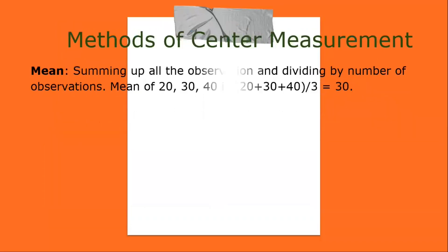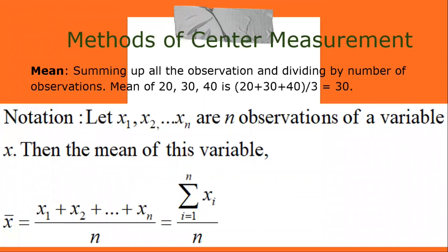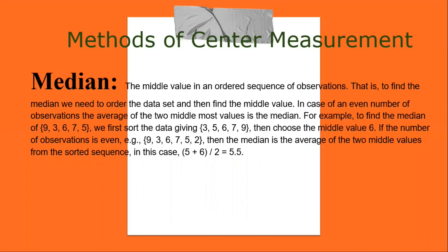The mean is computed by summing up all the observations and dividing by the number of observations. The mean of 20, 30, 40 is (20 + 30 + 40) / 3 = 30. If x1, x2, ..., xn are observations of a variable x, then the mean is (x1 + x2 + ... + xn) / n. The median is the middle value in an ordered sequence of observations — to find the median, order the data set and then find the middle value.